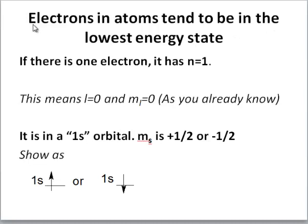Electrons in atoms tend to be in the lowest energy state. This is the most stable state and how they are most commonly found in nature. If there is one electron, it has n equals 1, the lowest energy state. If n equals 1, then l has to be 0 because l ranges from 0 to n minus 1, and m sub l has to be 0 because m sub l ranges from negative l to l in steps of 1. Therefore, if an electron has n equals 1, it's in a 1s orbital.